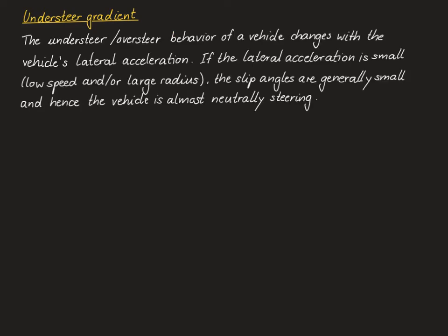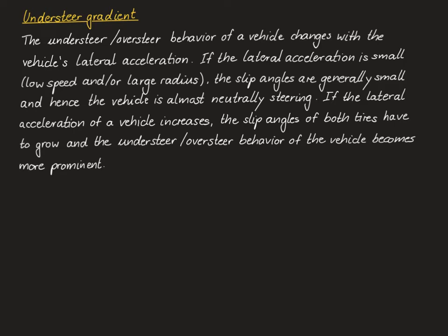It makes intuitive sense that the understeer or oversteer behavior of a vehicle changes with its lateral acceleration. For example, imagine a vehicle driving at a very small lateral acceleration, meaning it is driving at a low speed or on a track with a very large radius. Since the lateral acceleration is small, the slip angles of the front and rear wheels are small and hence the vehicle is almost neutrally steering.